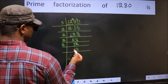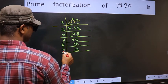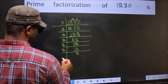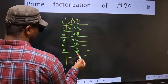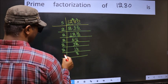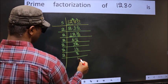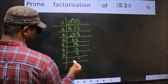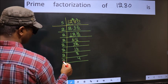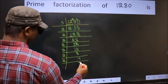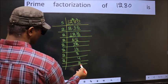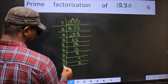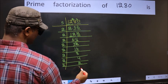Now here we have 16. 16 is 2×8=16. Now we have 8. 8 is 2×4=8. Now we have 4. 4 is 2×2=4. Now we have 2. 2 is a prime number, so 2×1=2.